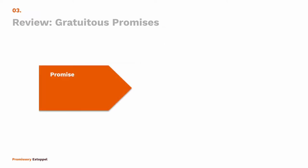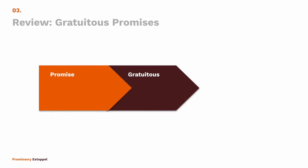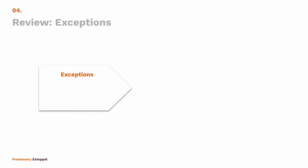The focus right now is on gratuitous promises. We've still got a promise, but this one is gratuitous, meaning there is nothing coming back the other way — there is no consideration. Ordinarily those promises are not legally enforceable, but there are exceptions. A gratuitous promise for a gift, once that gift has been executed, that gift can't be taken back. The fact that the initial promise was gratuitous is now irrelevant.